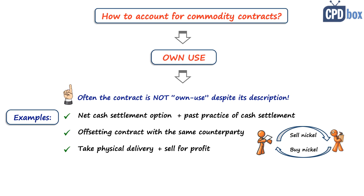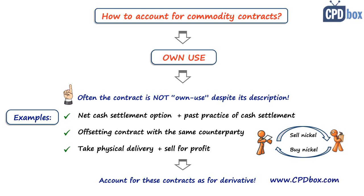All these circumstances indicate that the contract is not an own-use contract and therefore you must account for it as a derivative. You can visit my website — the link to the article is below this video in the description — where you can find a numerical example with journal entries related to accounting for own-use contracts and accounting for a derivative, so you can compare and see the difference yourself.